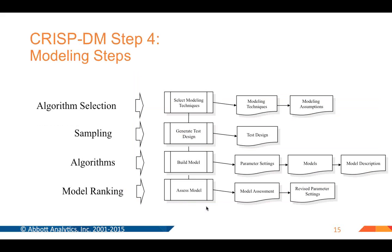Now I'd like to go through the steps of actually building the predictive models. So far, we've defined the objectives, surveyed the data landscape, fixed the data, created derived attributes, and created new versions of variables. Then there are four modeling steps: selecting the techniques, doing sampling and test design, using different algorithms to build models, and ranking, scoring, and assessing the models to see if they're any good.